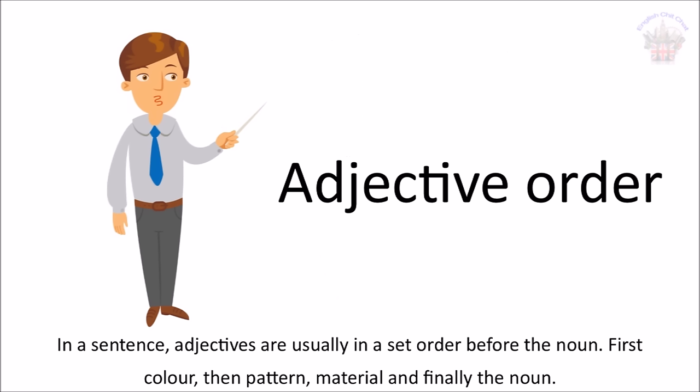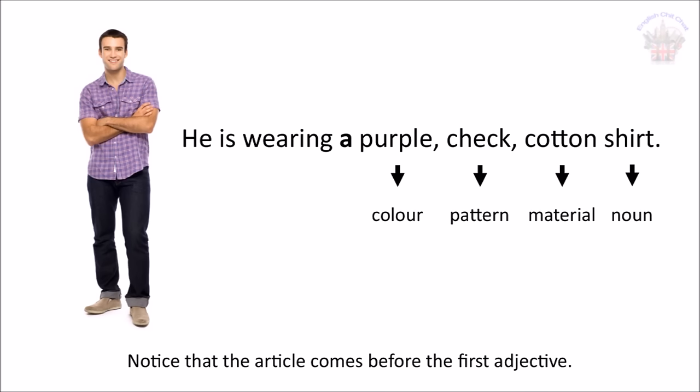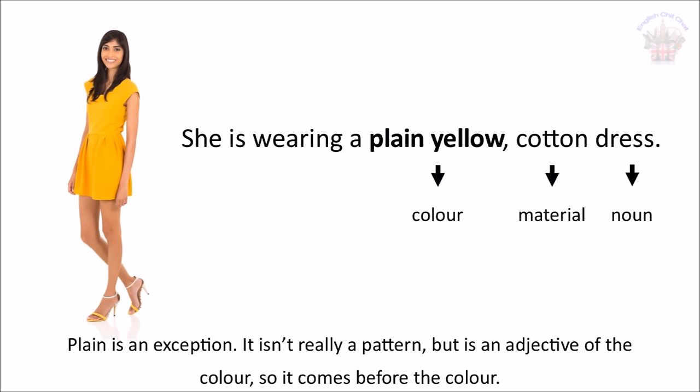In a sentence, adjectives are usually in a set order before the noun. First colour, then pattern, material and finally the noun. He is wearing a purple Czech cotton shirt. Notice that the article comes before the first adjective. Plain is an exception — it isn't really a pattern, but is an adjective of the colour, so it comes before the colour. She is wearing a plain yellow cotton dress.